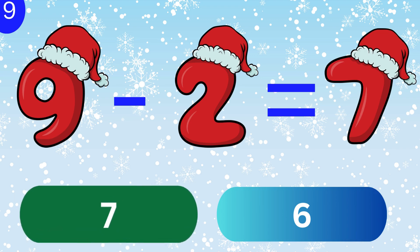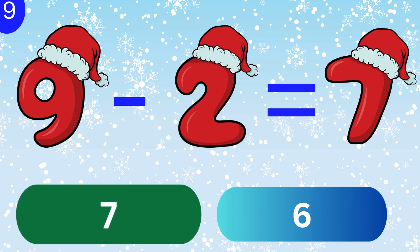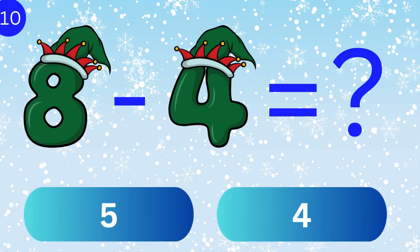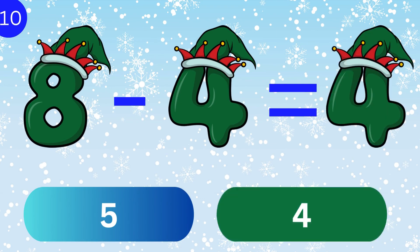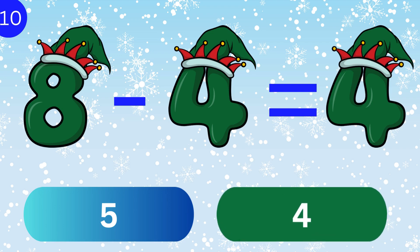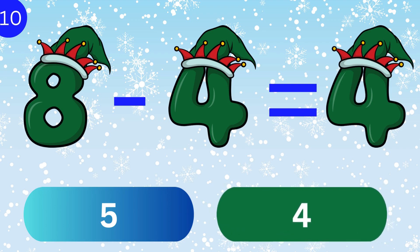What is 8 minus 4? 4. 8 minus 4 equals 4.